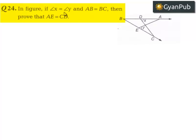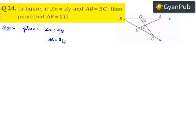Moving on to the 24th question. In the figure, if angle x is equal to angle y and AB is equal to BC, then prove that AE is equal to CD. Now moving on to the solution — given that angle x is equal to angle y, and AB is equal to BC, we are asked to prove that AE is equal to CD.